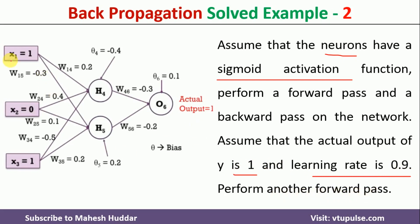The network has inputs x1, x2, x3 with values 1, 0, 1. H4 and h5 are the hidden layer neurons and h6 is the output layer neuron. W14, w15, and so on are the hidden layer weights; w46 and w56 are the output layer weights. Theta4, theta5, and theta6 are the biases with respect to h4, h5, and o6.